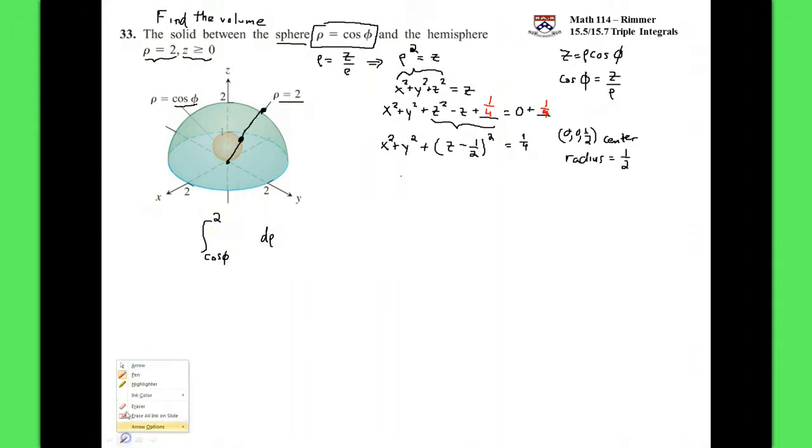The integrand is for volume dV, which becomes from the Jacobian ρ squared sine of φ. We have the ρ bounds. What about the φ bounds? Remember, z equals zero, the z-axis, that's φ equals zero. And φ comes down, and we have all these angles, but by the time we get to the x-y plane, we're done. We can't have anything beyond that. If φ is 90 degrees, this angle down from the positive z-axis, then you're on the x-y plane. So for φ, we go from zero to 90, zero to π over 2.